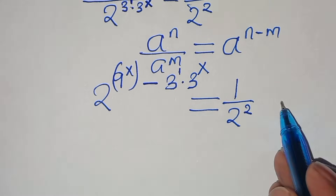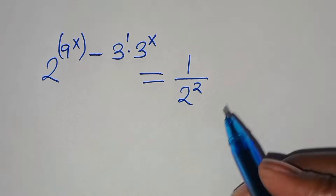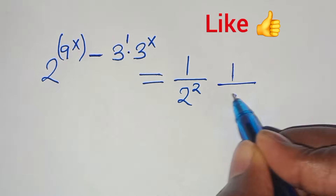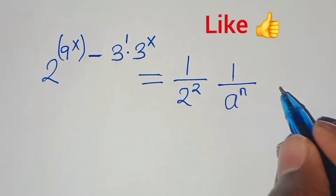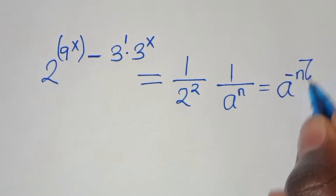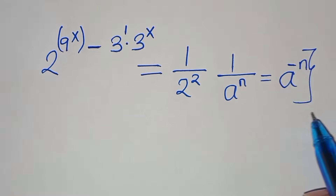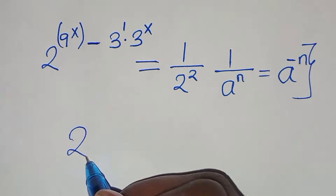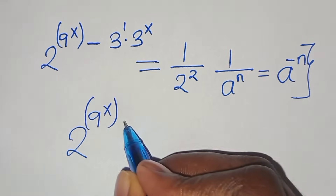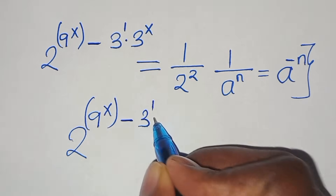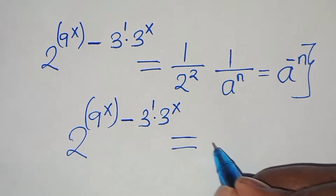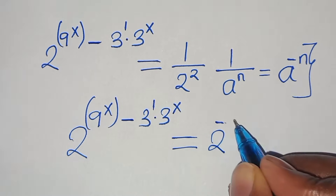Now, 1 over 2 to the power of 2 is in the form of 1 over a to the power of n, which we can express as a to the power of minus n. Applying this property, we now have 2 to the power of 9 raised to the power of x, subtract 3 to the power of 1 times 3 to the power of x, equals 2 to the power of minus 2.